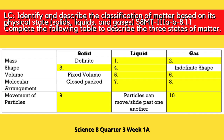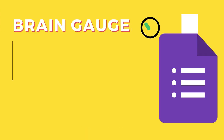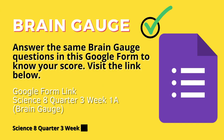Direction: Complete the following table to describe the three states of matter — solid, liquid, gas — using the categories: mass, shape, volume, molecular arrangement, and movements of particles. Answer the same brain gauge question in this Google form to know your score. Kindly visit the link below found on this video description. Thank you.